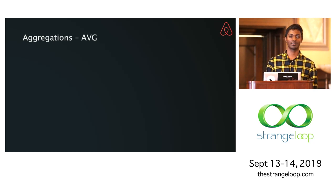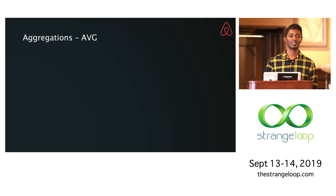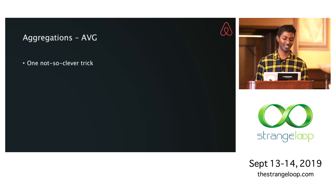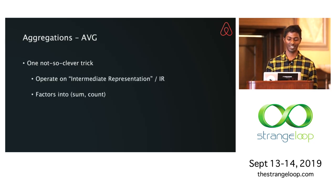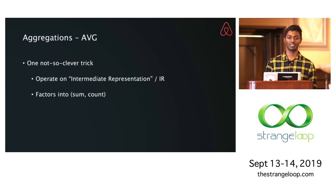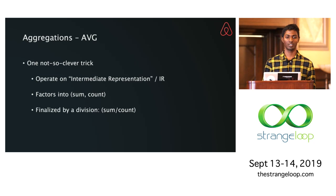A question to the audience: does average also have the same properties? There is a not-very-clever trick, which is changing the data you operate on to make it an abelian group — you factor the aggregate into sum and count, then aggregate over those instead of maintaining the average itself, and finalize with a division. So you can lift an average into something that's an abelian group with reversibility.